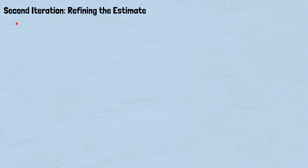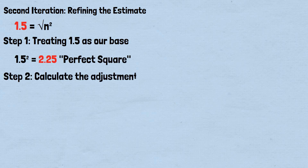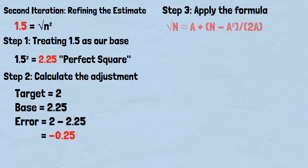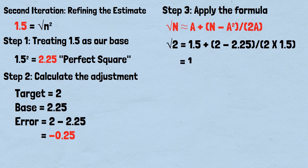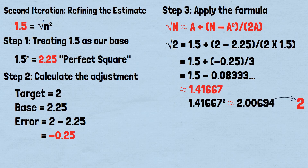Second iteration: now we treat 1.5 as if it were the square root of a perfect square. If 1.5 were exact, then 1.5²=2.25 would be our perfect square. Error: 2 minus 2.25 equals negative 0.25. Apply the formula: √2 ≈ 1.5 + (−0.25)/3 = 1.5 − 0.08333 ≈ 1.41667. Check: 1.41667² ≈ 2.00694, which is much closer to 2.